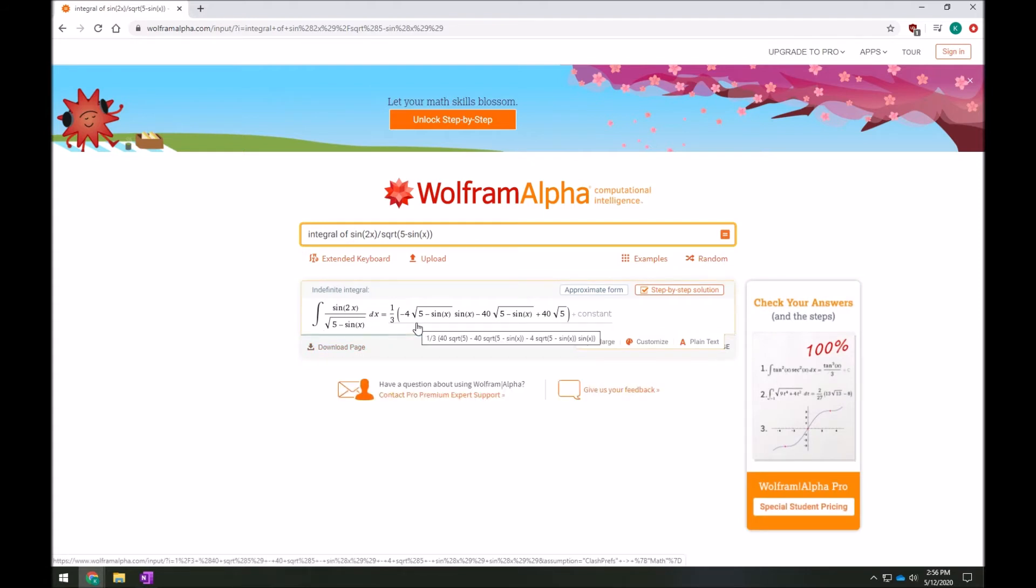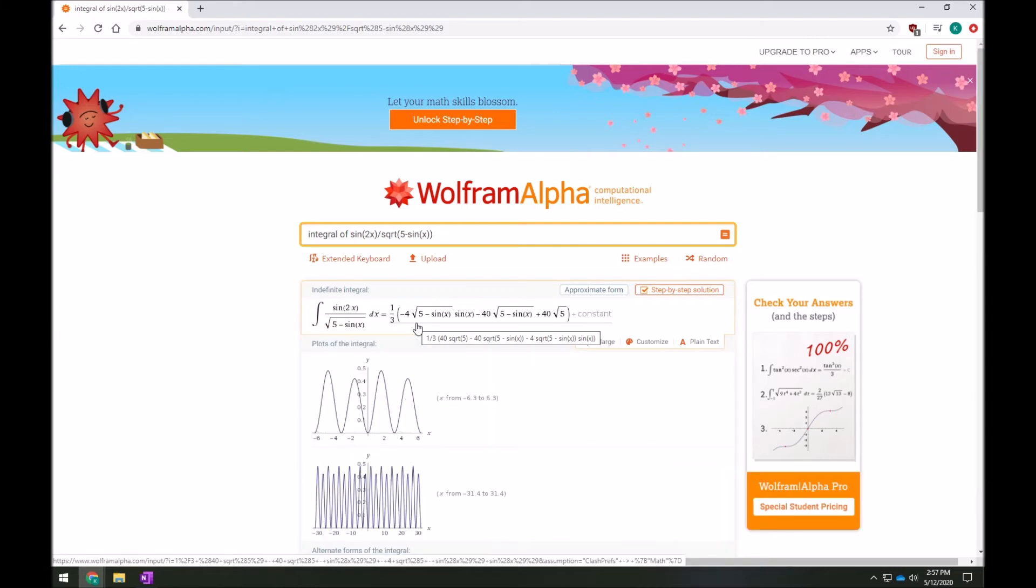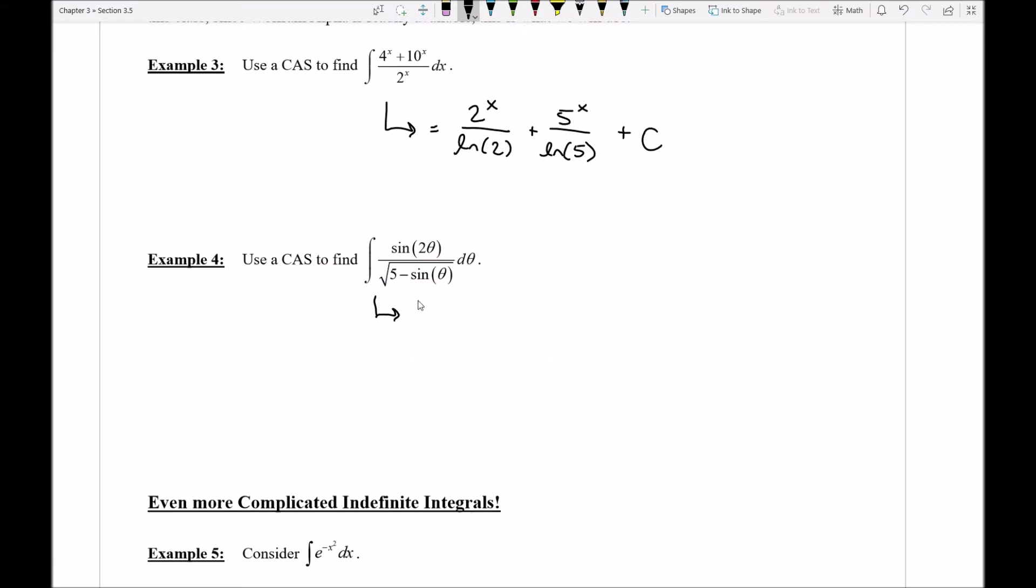So here's my answer. Oh gosh, that is a very long one. Making sure I got all that down. So this is really long. This is 1/3, and then I think we had in there a minus 4 square root 5 minus sine x times another sine x minus 40. There was a square root of 5 minus sine of x. And then it was plus 40 square root 5. And of course, it was all of that. Wolfram reminded us plus C.